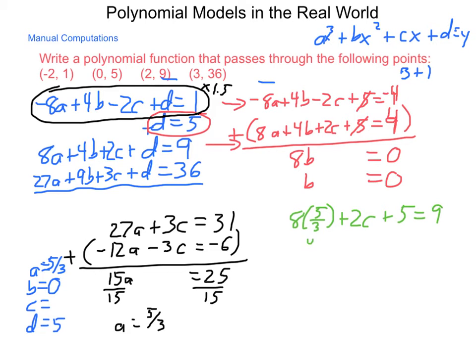Multiplying and subtracting, I will get 40 thirds plus 2c equals 4. And just to make it easier, we'll have that say 12 thirds. Subtracting 40 thirds from the 12 thirds, I have 2c is equal to negative 28 thirds. Dividing both sides by 2, c is equal to negative 14 thirds. So, my end equation is going to look like 5 thirds x cubed plus 14 thirds x plus 5 equals y.